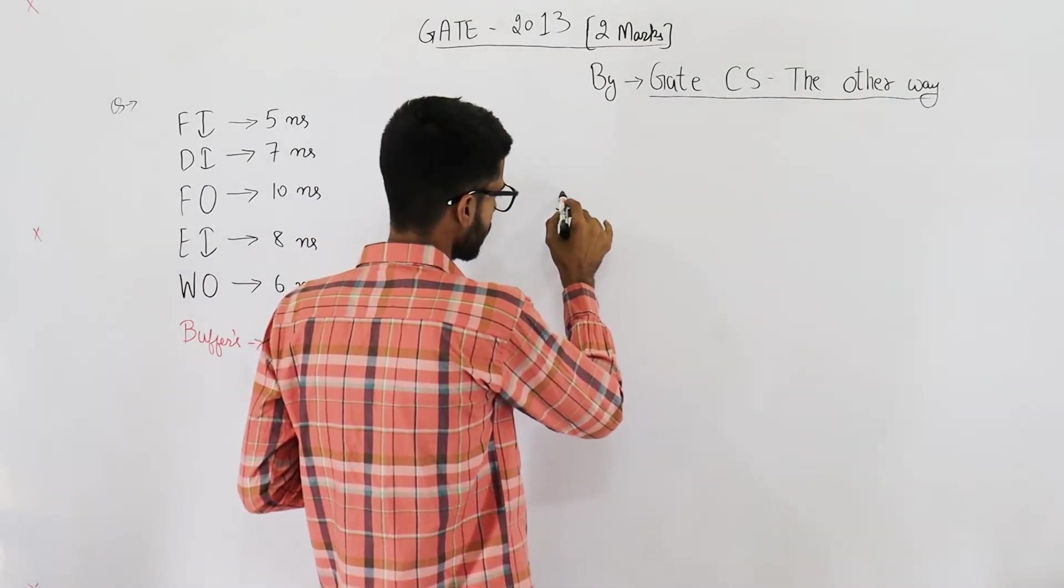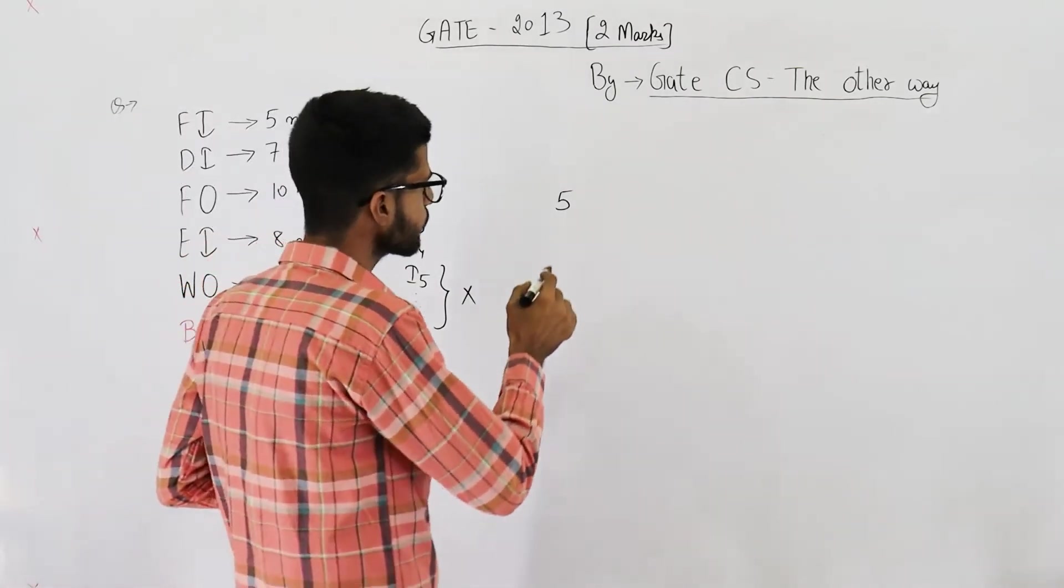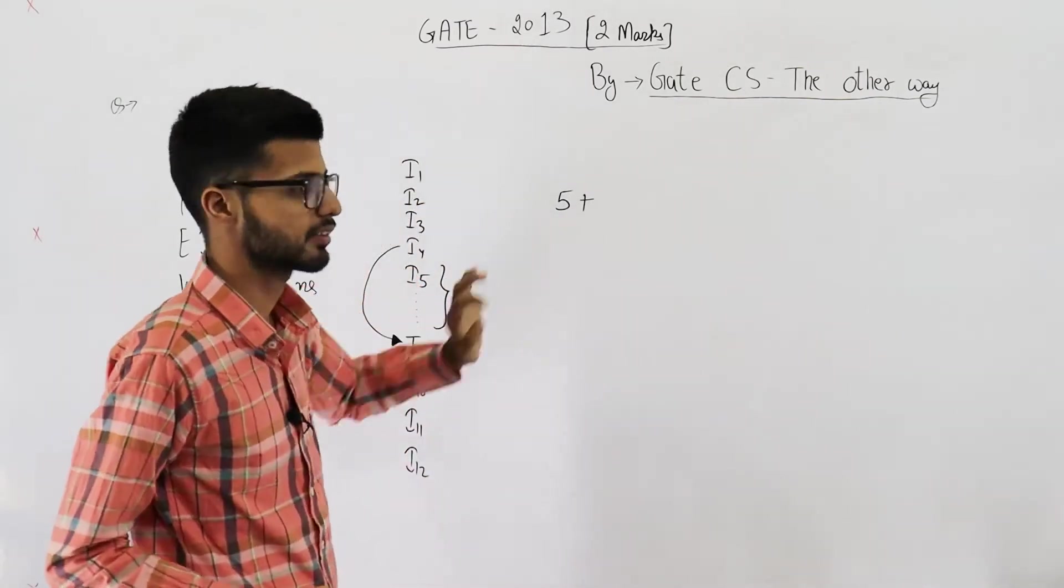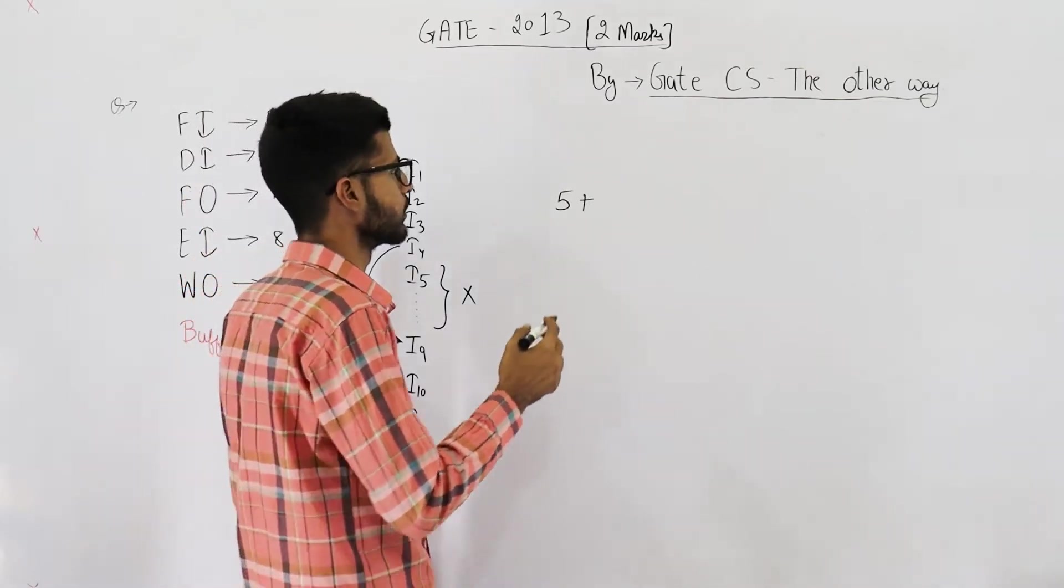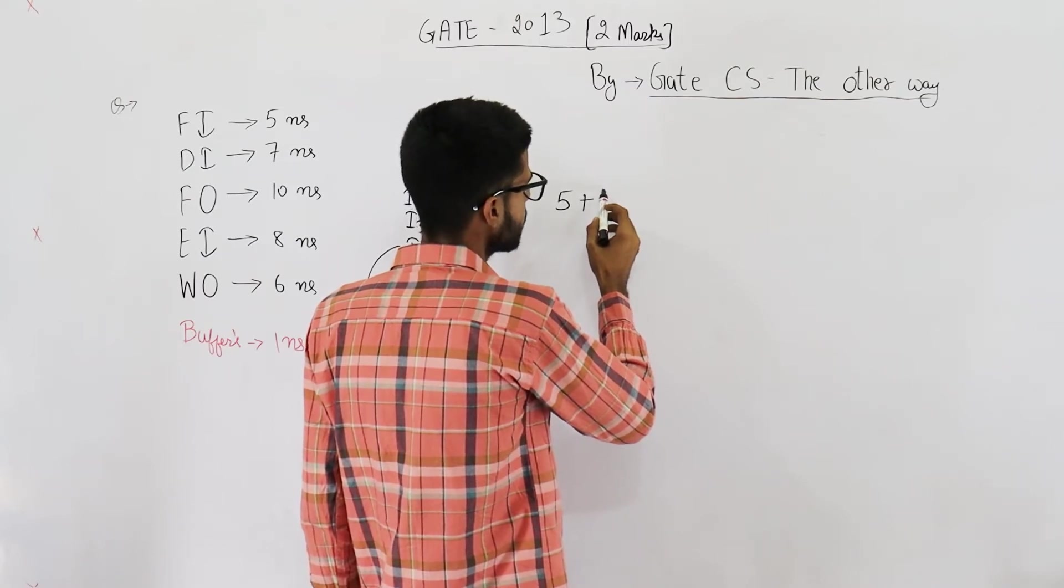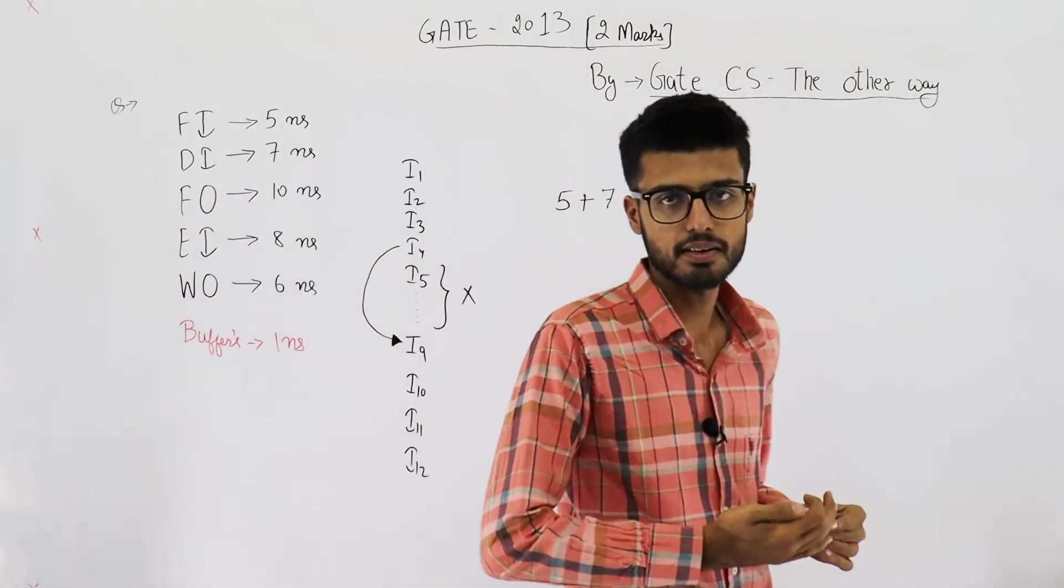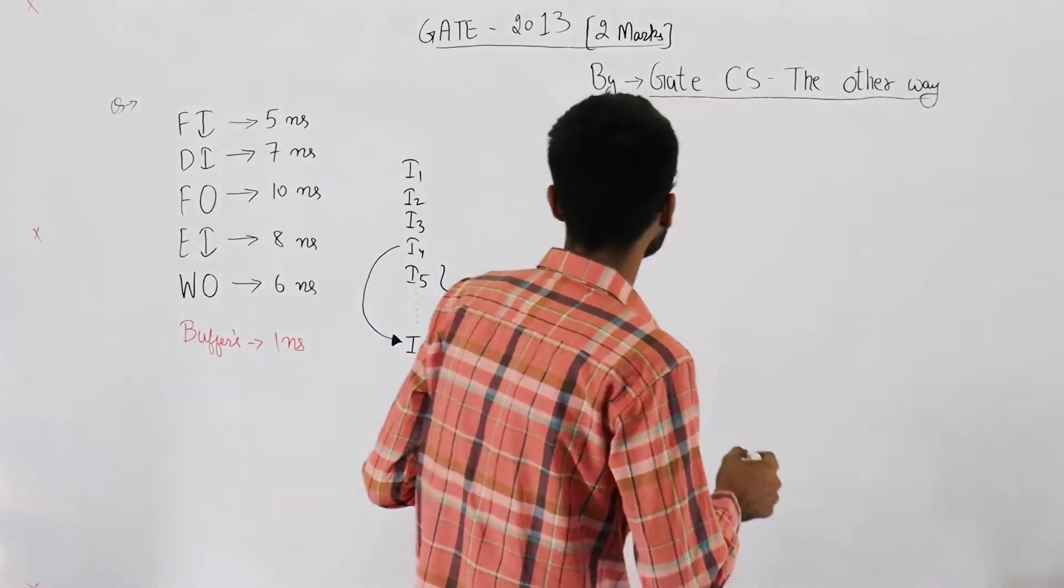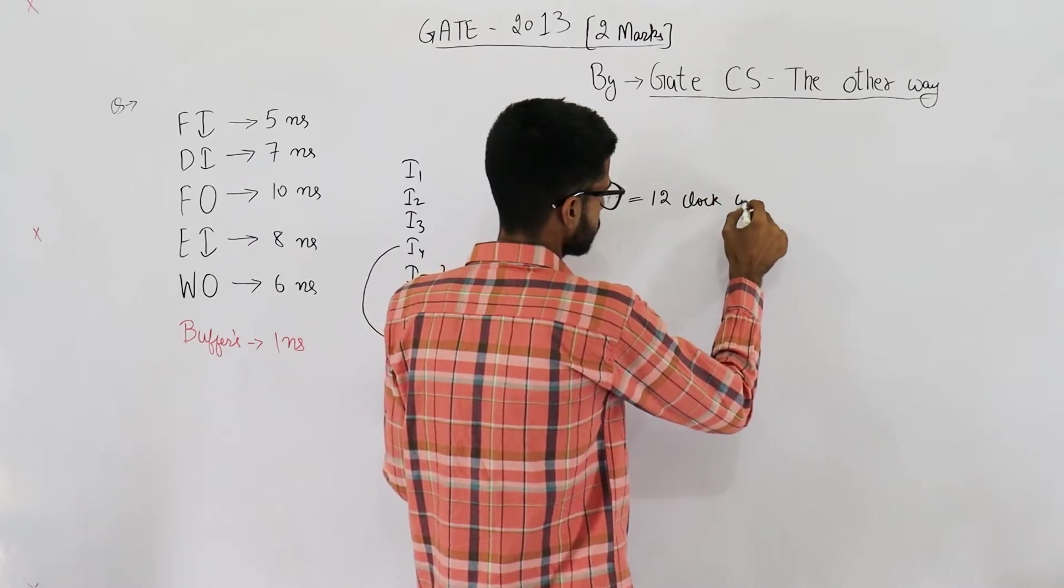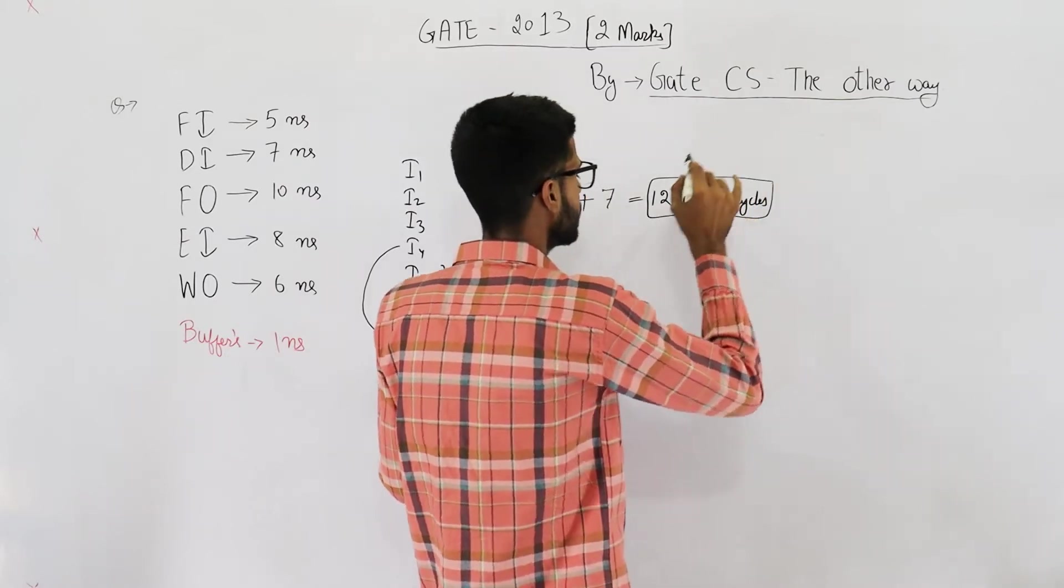First instruction is going to take all 5 stages because initially the pipeline is empty. After that, we are left with 7 instructions only because total were 8. First instruction is executed and the pipeline has filled. Now every instruction will take one clock cycle each. That means remaining 7 instructions will take 7 clock cycles each. So in total 12 clock cycles are required by a program with 8 instructions.